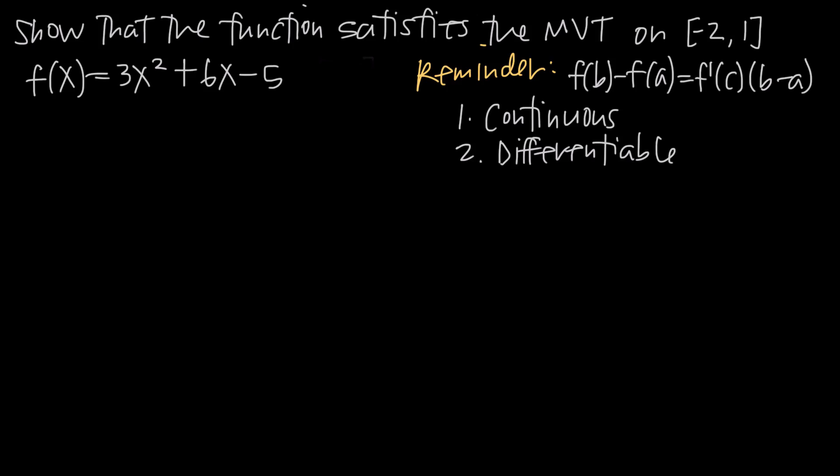In this video, we're going to be talking about the mean value theorem and how to show that a function satisfies the mean value theorem on a particular interval. The function we've been given is f(x) = 3x² + 6x - 5, and we've been asked to show that it satisfies the mean value theorem on the interval negative 2 to 1.